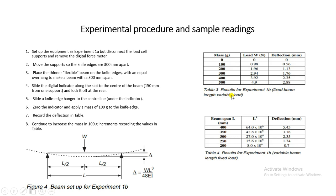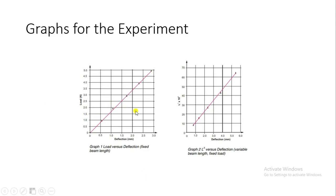For the variable beam length part: length changes while load remains fixed. Move both knife-edge supports to increase or decrease the span, but keep mass constant at 100, 200, or 300 grams as desired. Calculate deflection for each length using the formula δ = WL³/48EI. Graphs for both fixed beam length with variable mass, and variable beam length with fixed mass, are plotted to assess results.